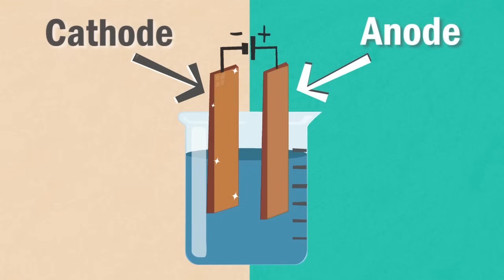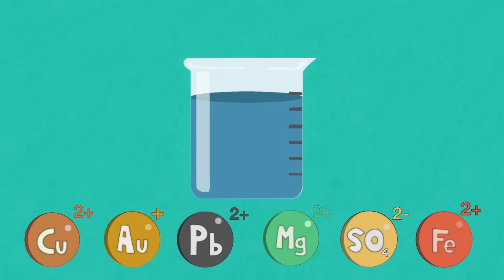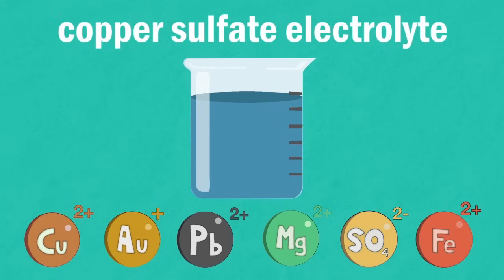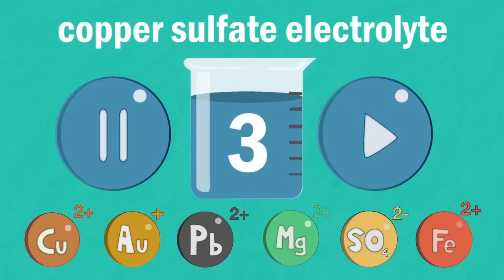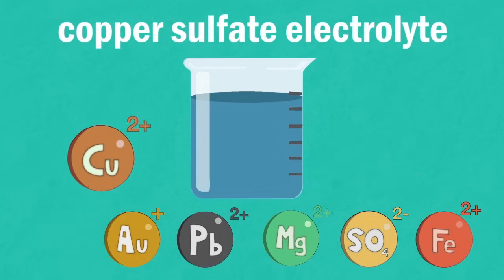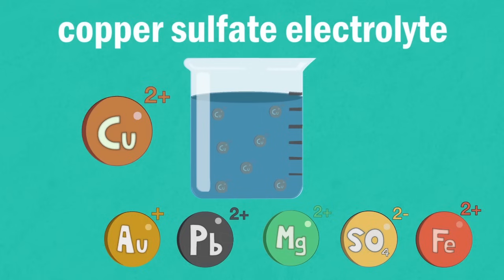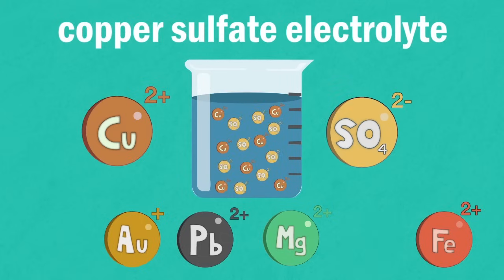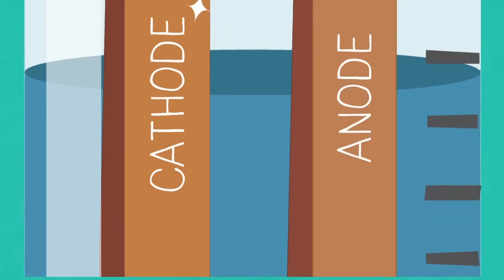What ions do you think are present in the copper sulfate electrolyte? The answer is that copper 2 plus ions are present in the electrolyte along with sulfate ions.